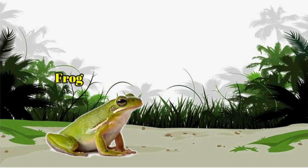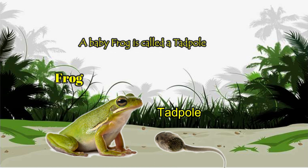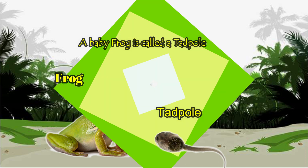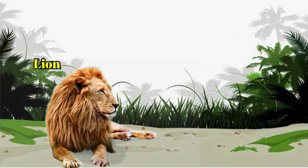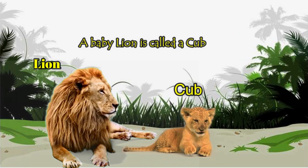Frog. Tadpole. A baby frog is called a tadpole. Lion. Cub. A baby lion is called a cub.